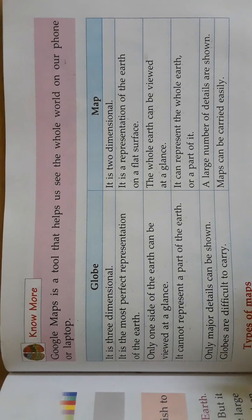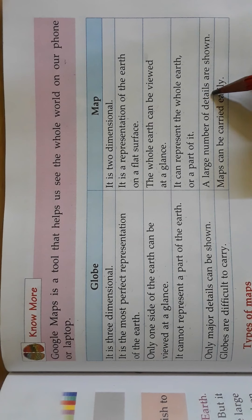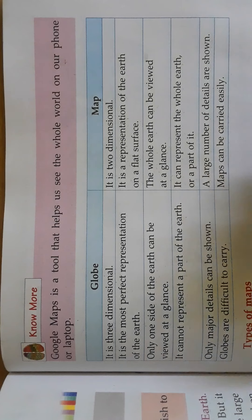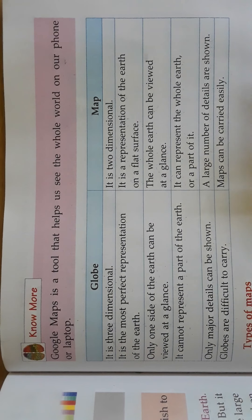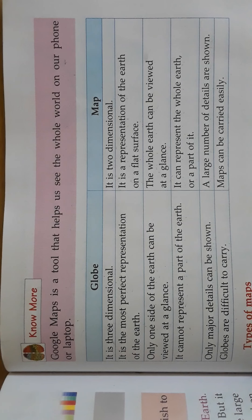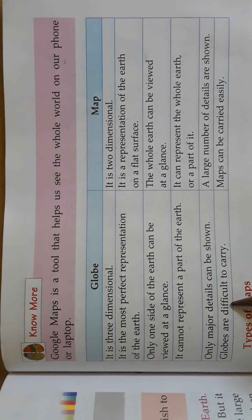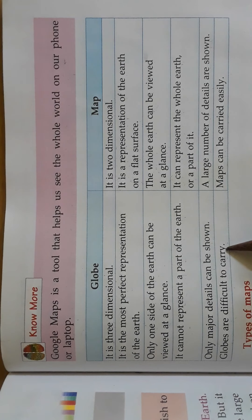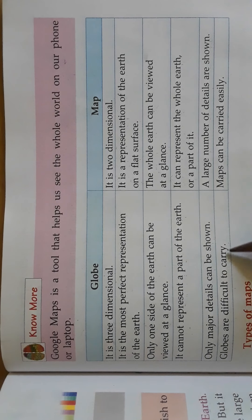On a globe, only major details can be shown — it shows continents, countries, large lakes, and oceans. But in a map, a large number of details are shown, like small rivers, oceans, lakes, and everything.